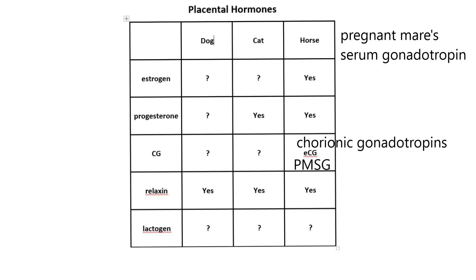Relaxin is a hormone also made by the ovary, but there's pretty good evidence that in dogs, cats, and horses it is also made by the placenta. It can relax the cervix at the end of pregnancy and has other functions as well. The third protein hormone in our series is placental lactogen — a great name referring to promoting lactation. It's not really found in these three animals, but in some animals like goats, placental lactogen goes through the body, binds receptors in the mammary gland, and promotes milk production.